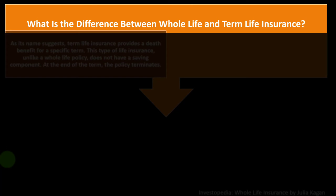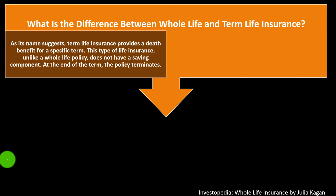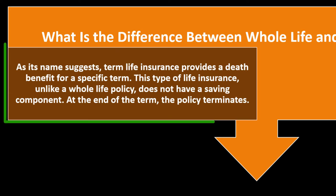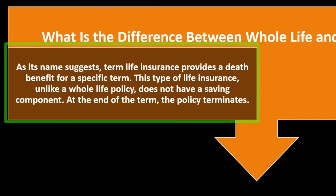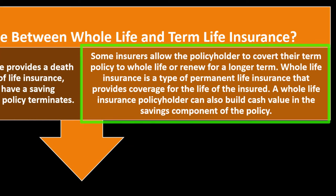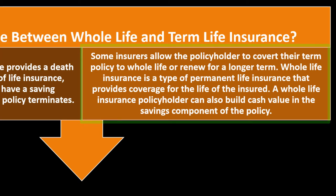What is the difference between whole life and term life insurance? Term life insurance provides a death benefit for a specific period — it is purely life insurance and does not have a savings component. At the end of the term, the policy terminates. Some insurers allow the policyholder to convert their term policy to whole life or renew for a longer term. Whole life insurance is a type of permanent life insurance that provides coverage for the life of the insured.